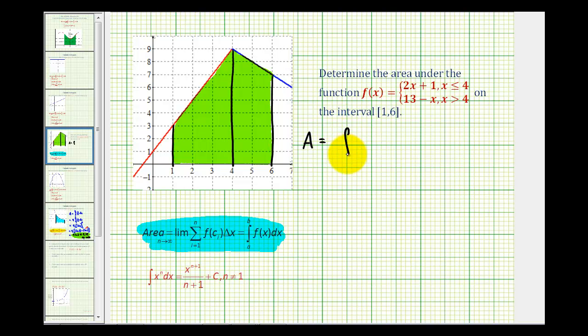The first definite integral will be from one to four, and on this interval the area is bounded by the red line which is 2x plus 1 when x is less than or equal to four. But then we'll also have to integrate from four to six using the second function of 13 minus x with respect to x. So the sum of these two definite integrals will give us the total area in green.